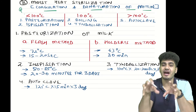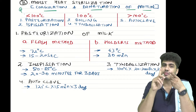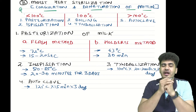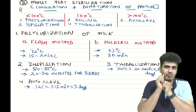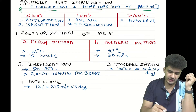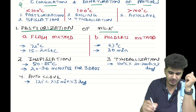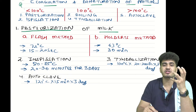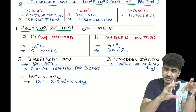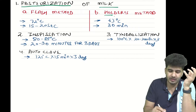In the less than 100°C category, we have pasteurization and inspissation. At 100°C, we have boiling and tyndallization. More than 100°C, we have autoclave. Let's learn about these one by one. Number one is pasteurization of milk — it is done by two methods: the flash method and the holder's method.